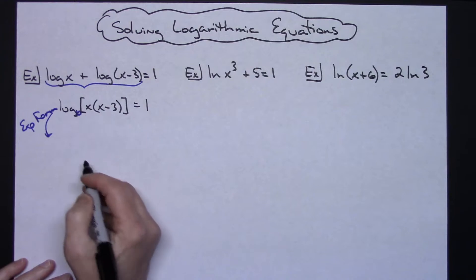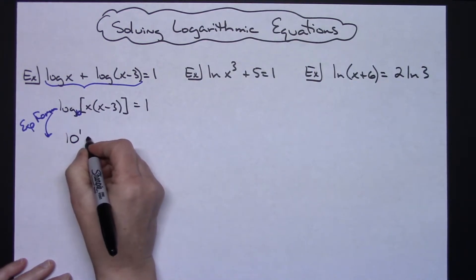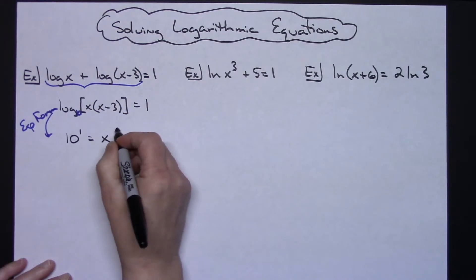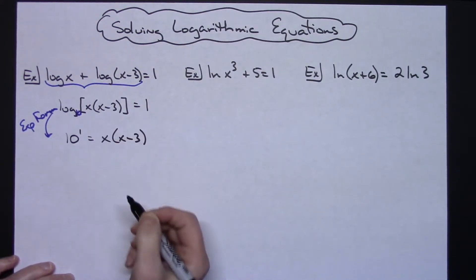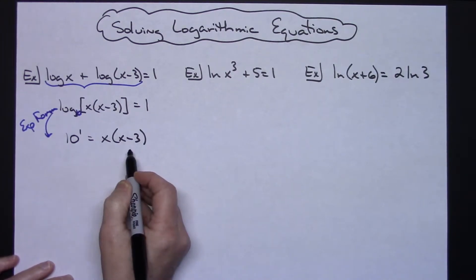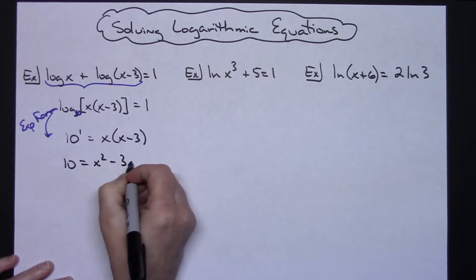I can write this 10 to the first power equals this expression right here, so I'll have 10 to the first power equals X times X minus 3. Once you go into exponential form then this becomes just a basic equation to solve. I'm going to have 10 equals X squared minus 3X.